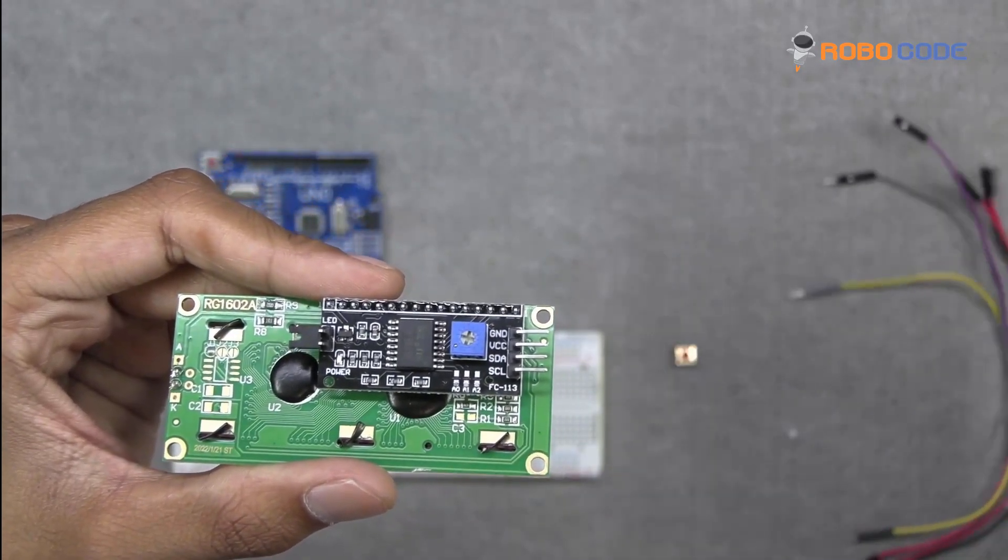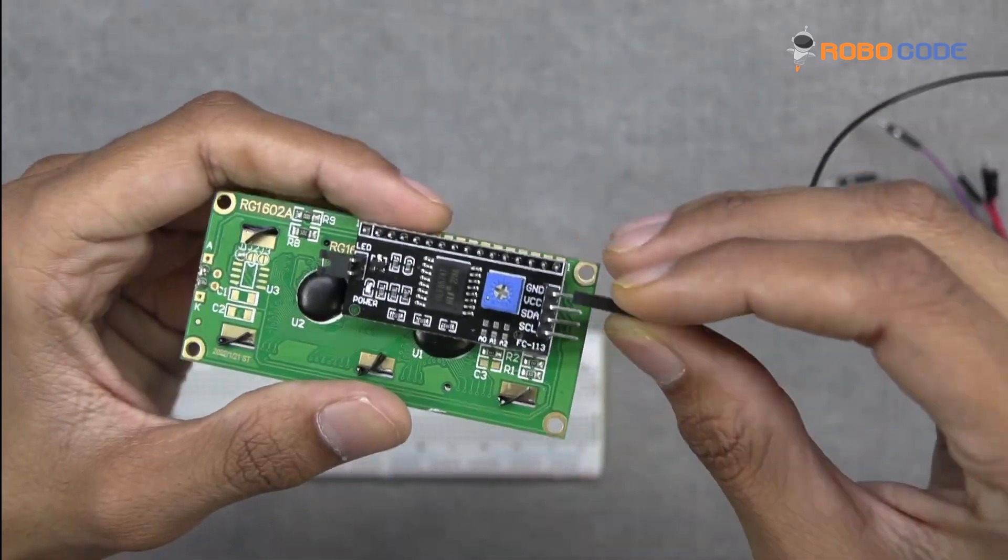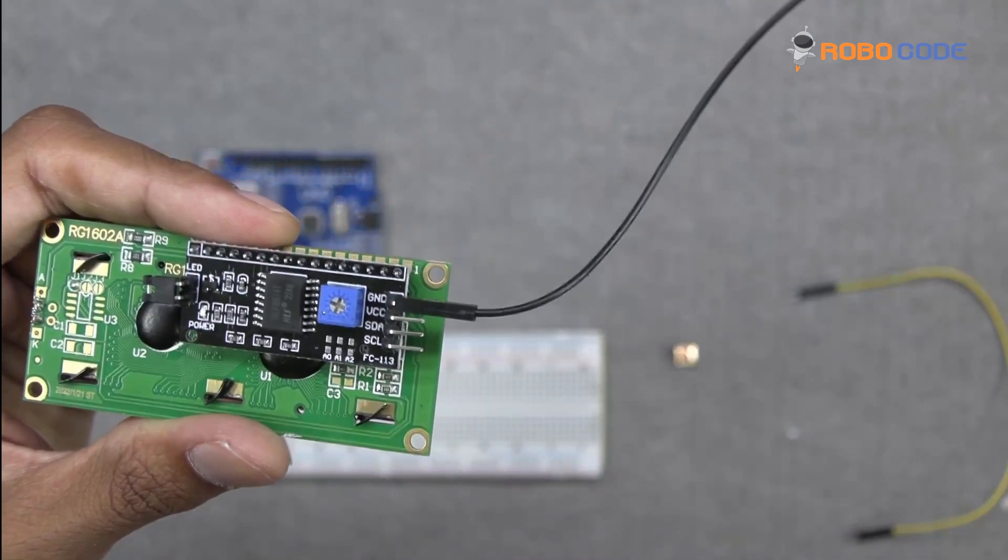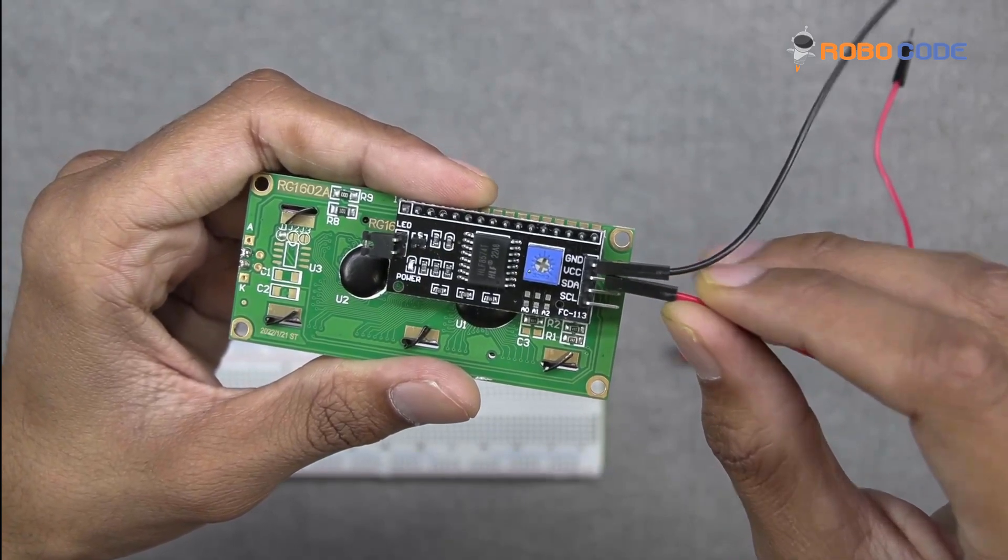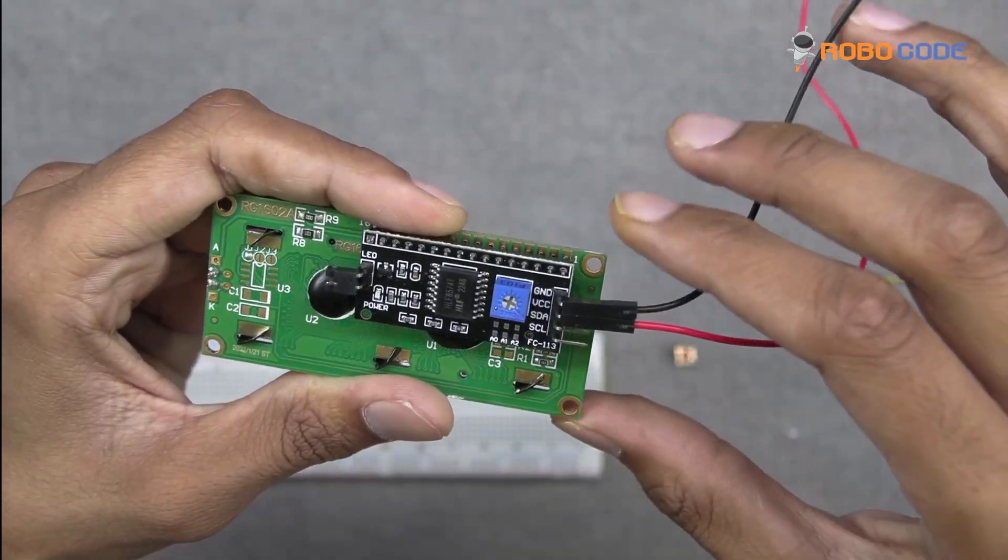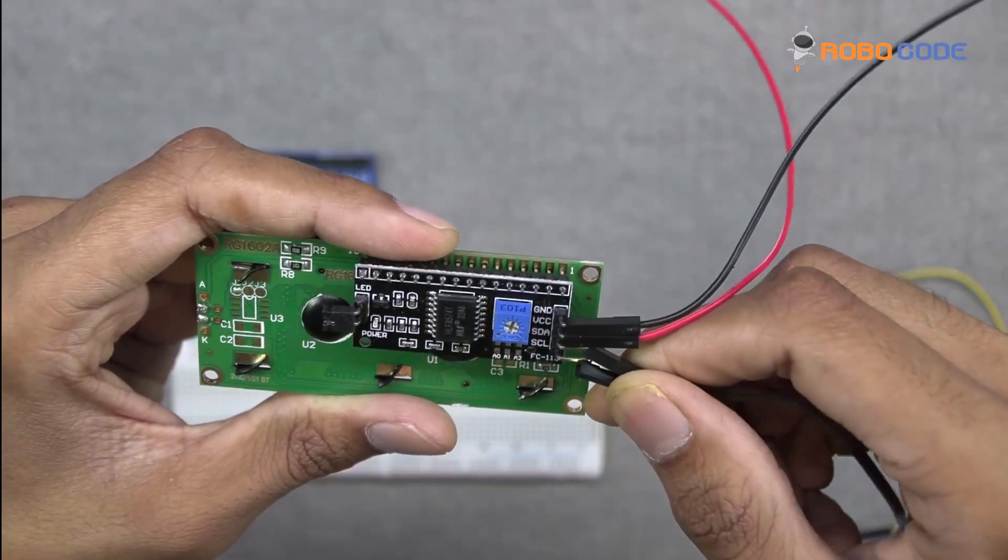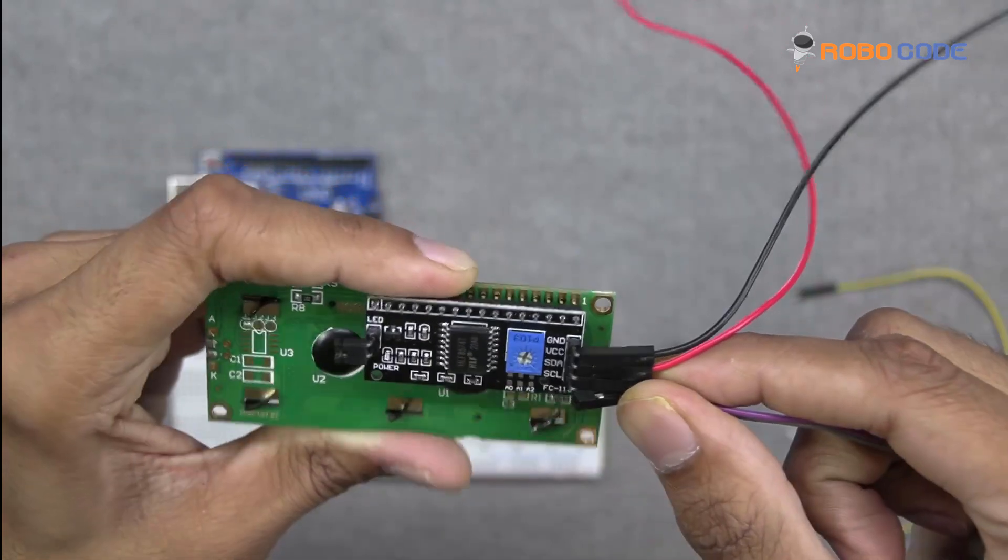We will take four jumper wires and connect the black one to the ground pin. Similarly, we'll take the red wire and connect it to the VCC pin. Purple wire to SDA and grey wire to SCL.